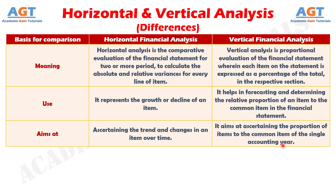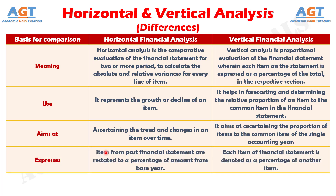Number 4. In horizontal analysis, the items of the present financial year are compared with the base year's amount, in both absolute and percentage terms. On the contrary, in vertical analysis, each item of the financial statement is compared with another item of that financial statement.